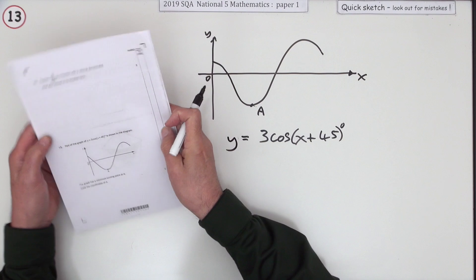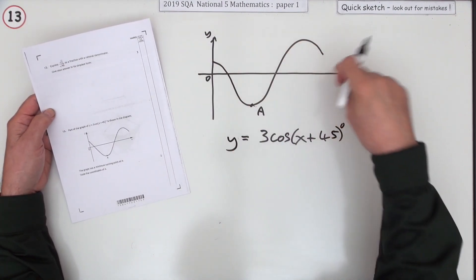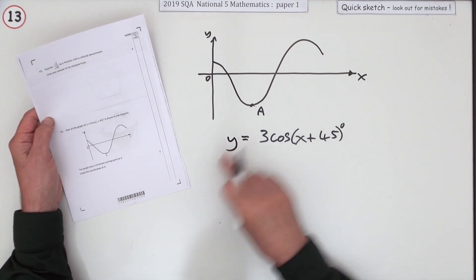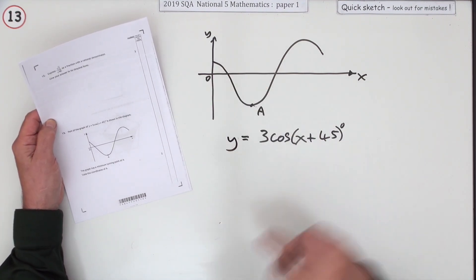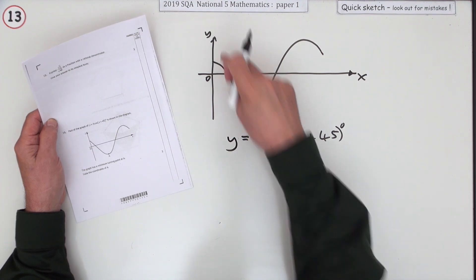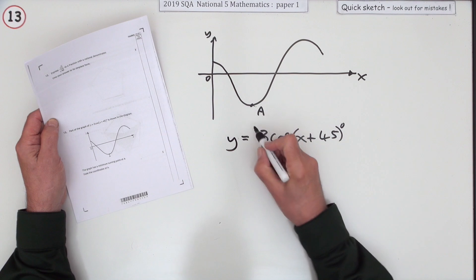So number 13 from paper 1 of the 2019 National 5, a little trig graph. It gives the equation of the graph here, says it's a cosine graph, and you can see there's something wrong with it - it's gone off to one side. What it wants to know is what are the coordinates of that turning point there, that minimum turning point, what are the coordinates of A?